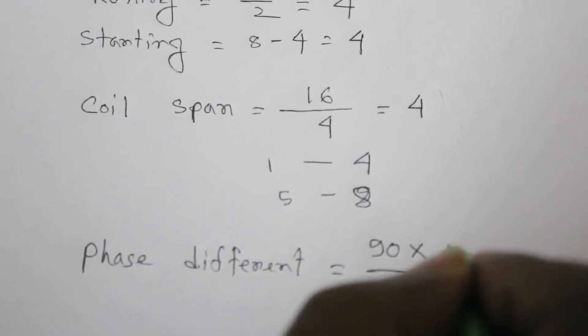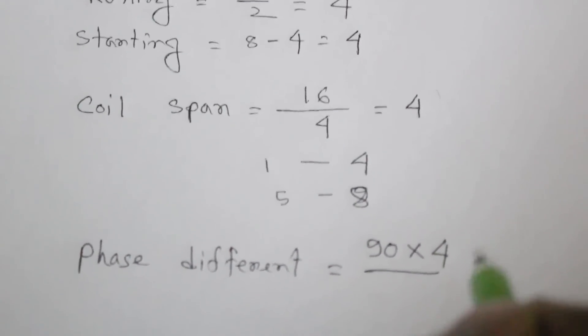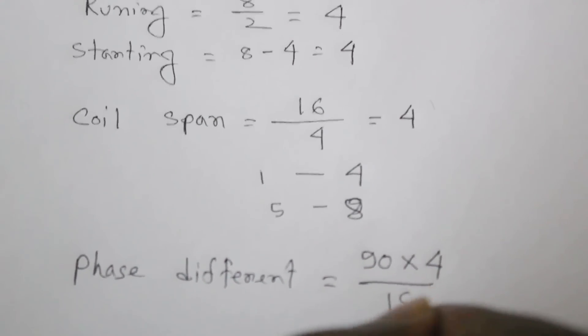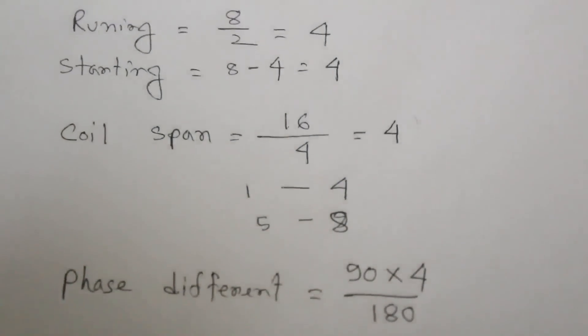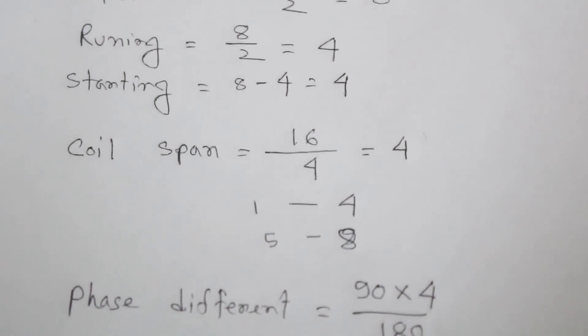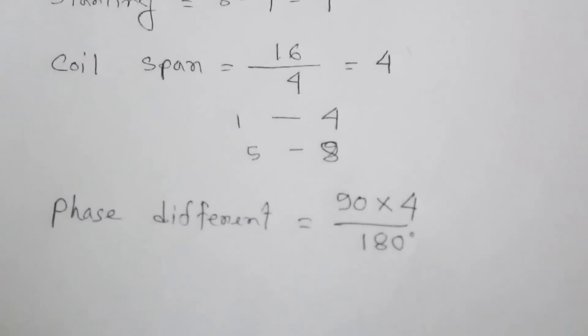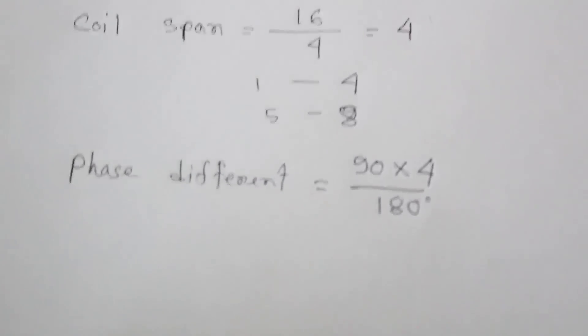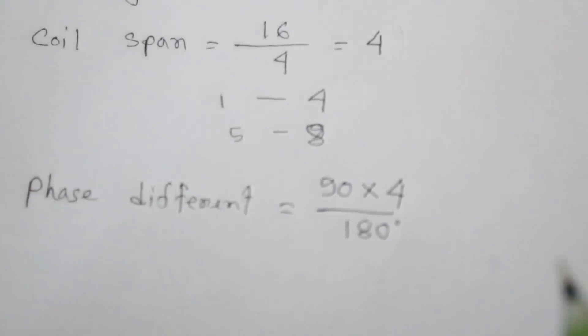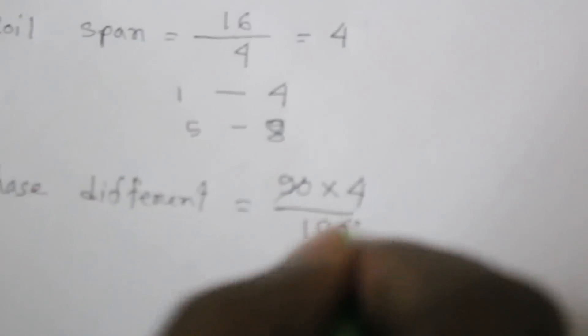Into coil span - here coil span is 4, and divided by 180 degree. This is a 1 coil degree. We calculate it, we get here 2.